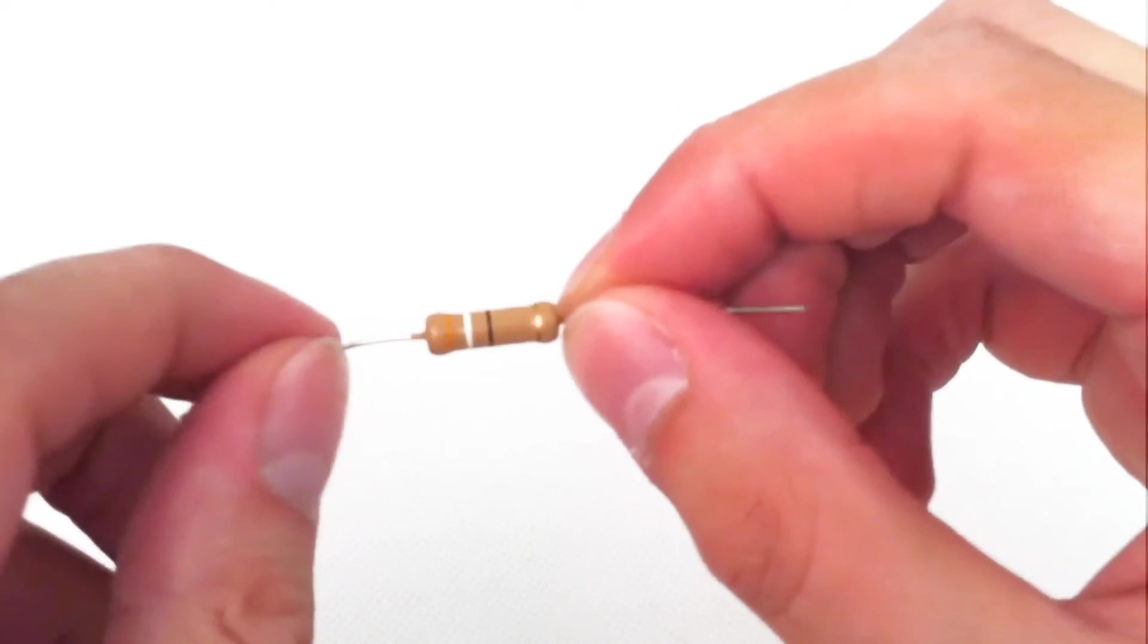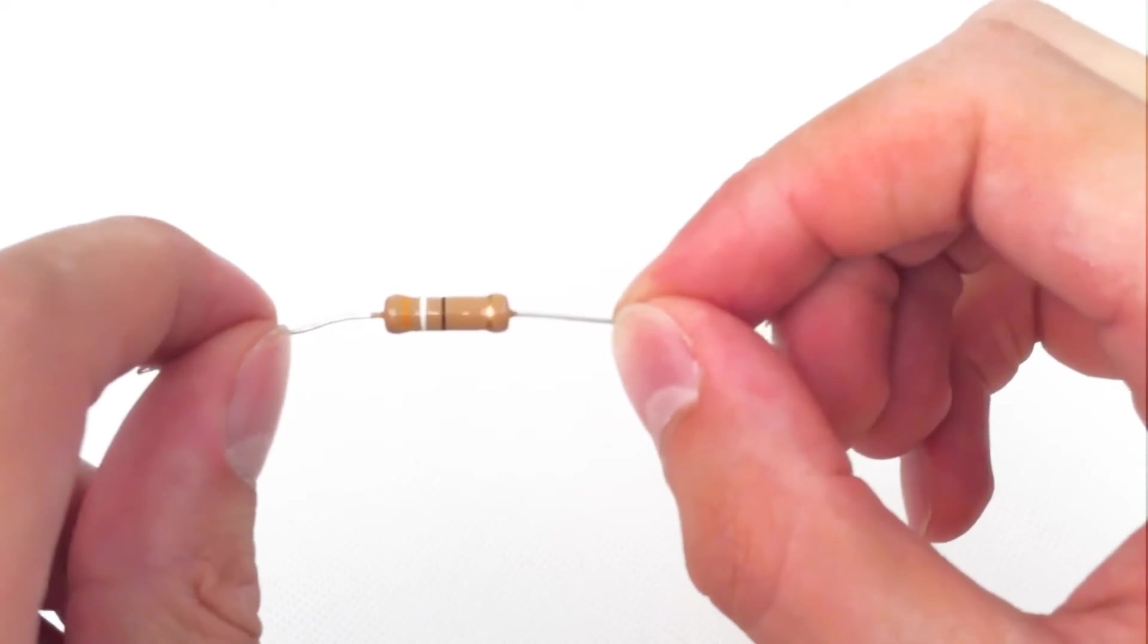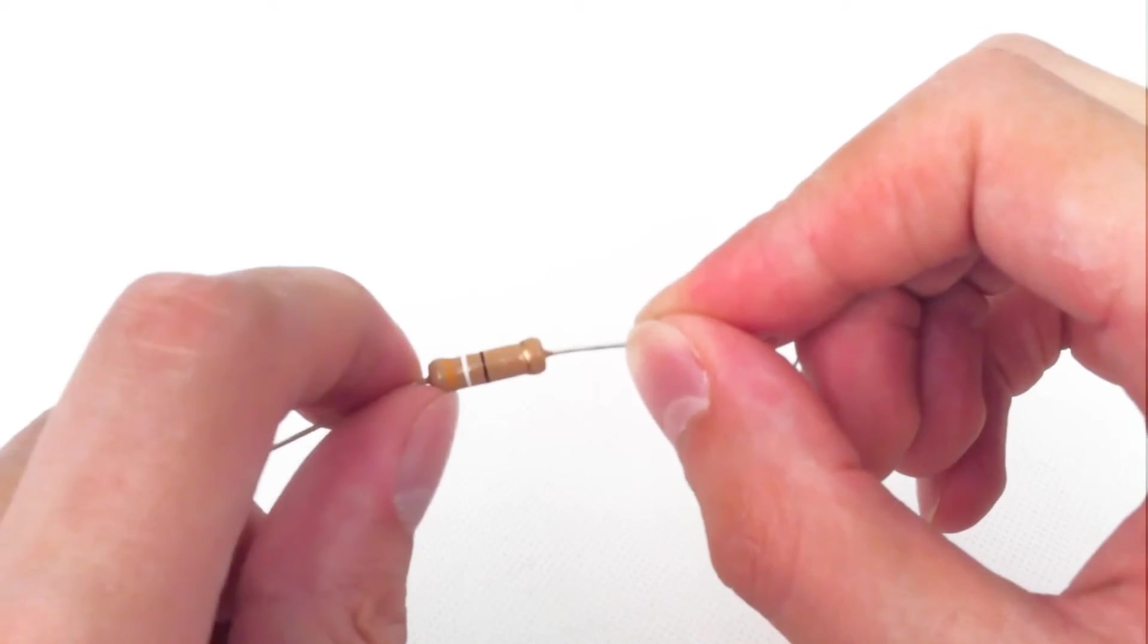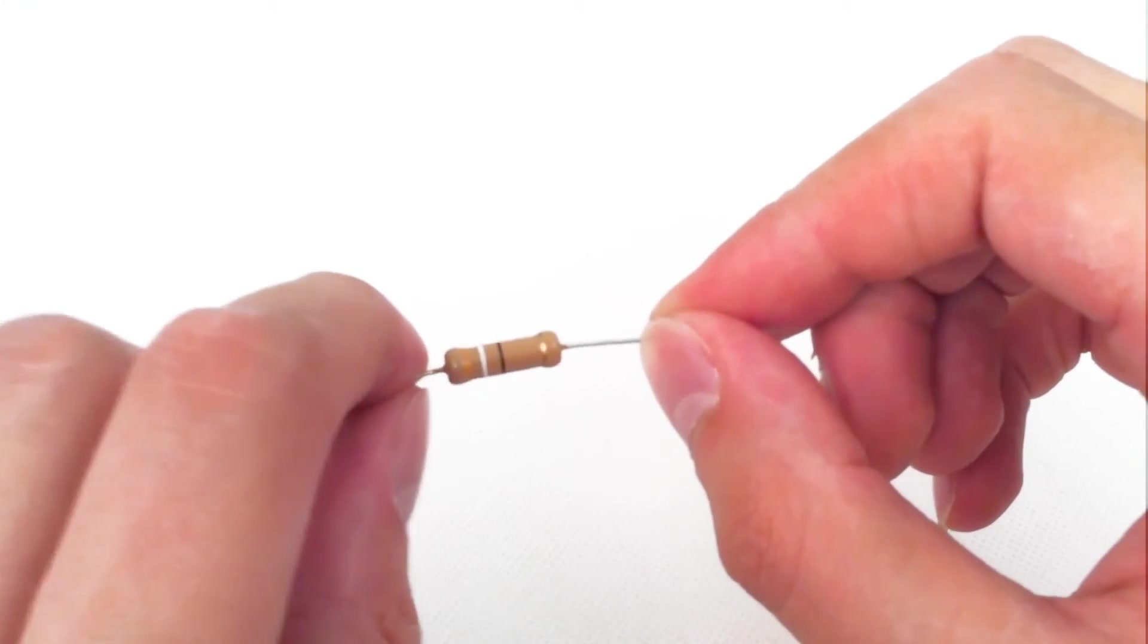Going back to our fixed resistor, you might wonder how is it we're able to tell the resistance of this, and we would say through the color coding stripes on the body.